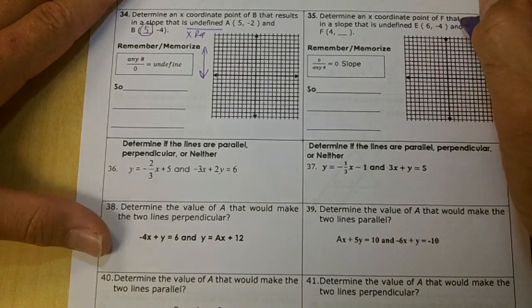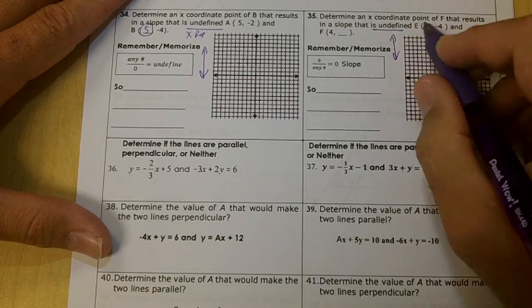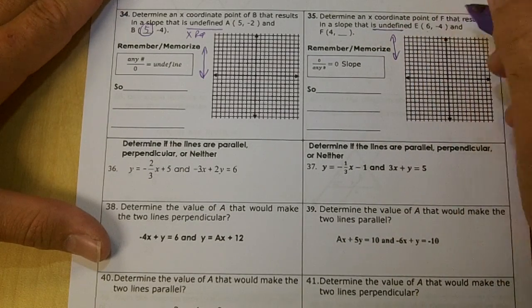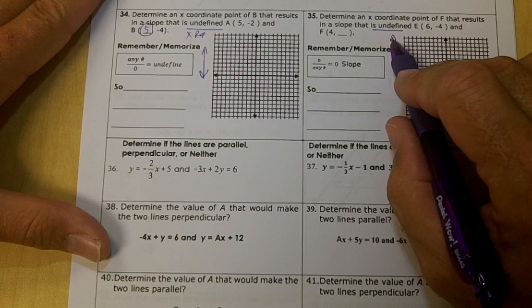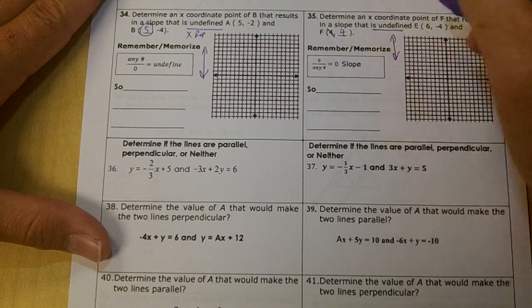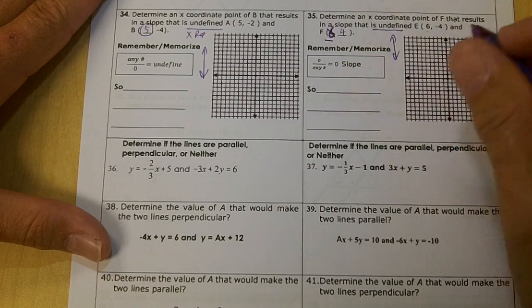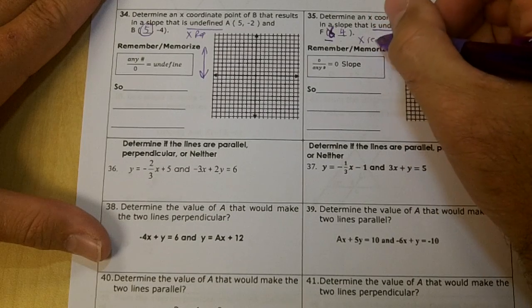Determine an x-coordinate point that results in a slope that's undefined. It's going to go straight up and down. The x repeats. This should not be 4 right here, let's make it 4 here. So this right here would be 6, wouldn't it? The x's repeat in an undefined slope.